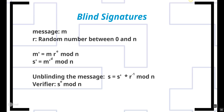You and the verifier can then verify that the message is correct. Unblinding the message to create the original s — which proves the message is from you — is done by taking s prime, which the signer generated, multiplied by the inverse of r, your random number, mod n. The verifier can then take that number, raise it to the e power, mod n, and this generates the original message.